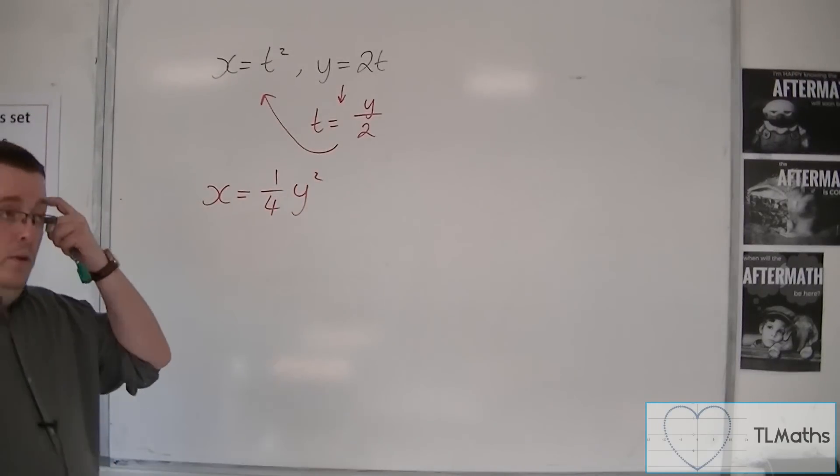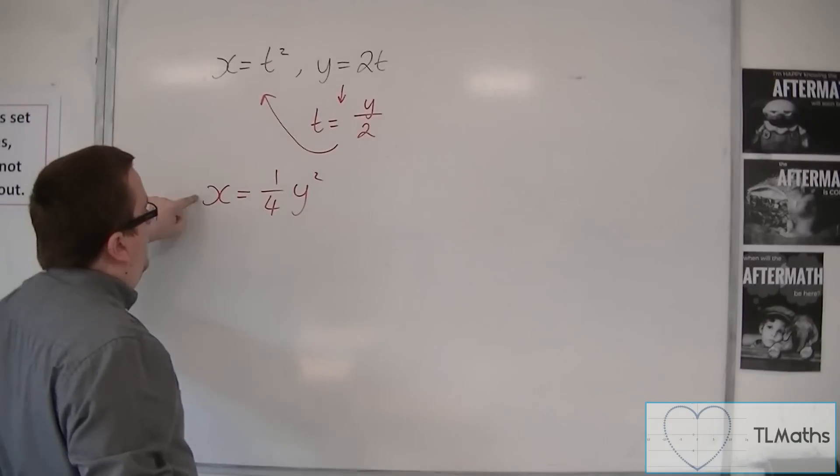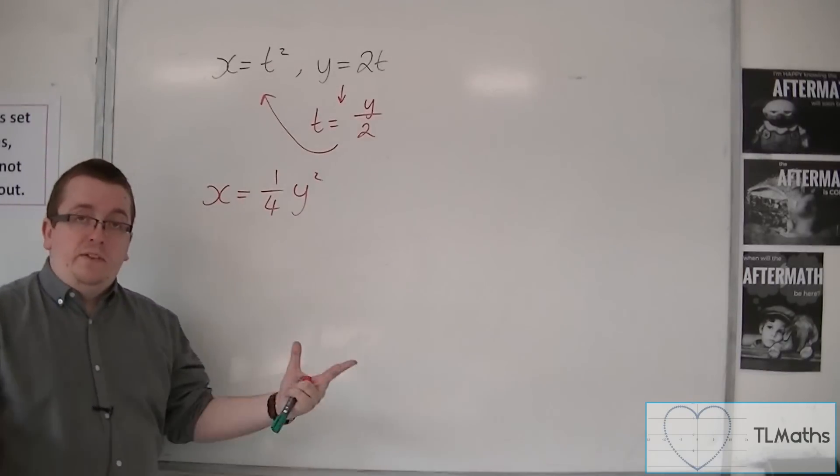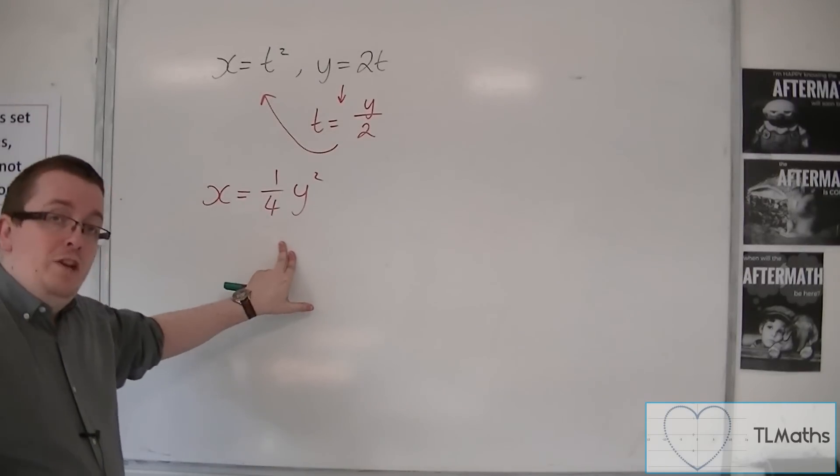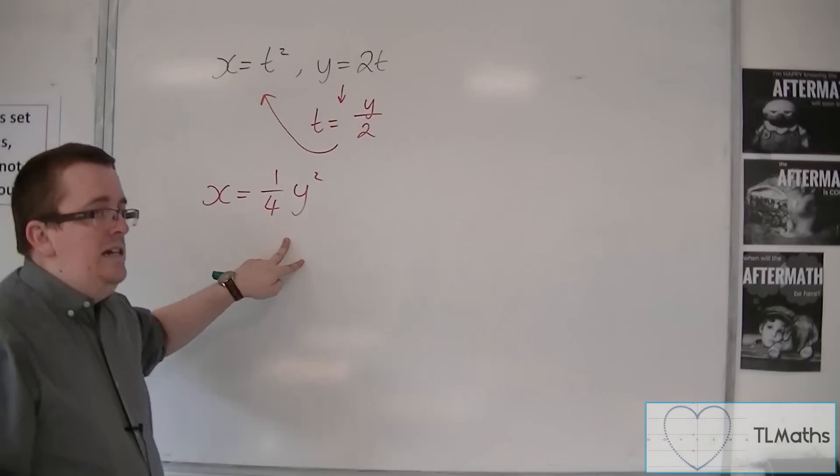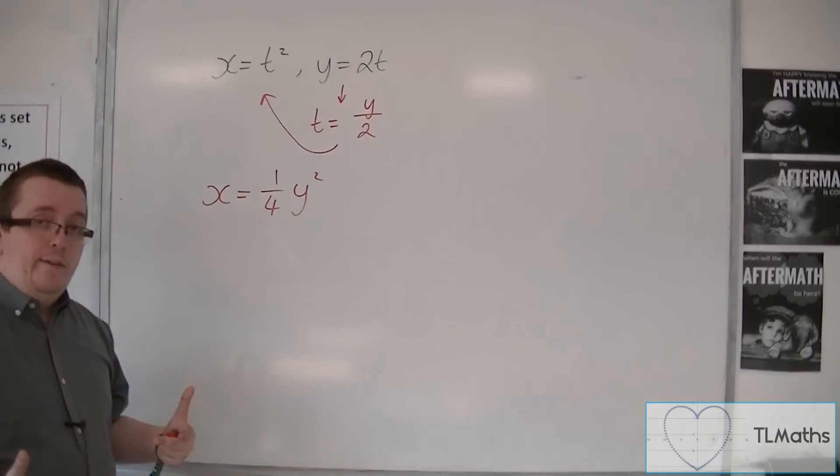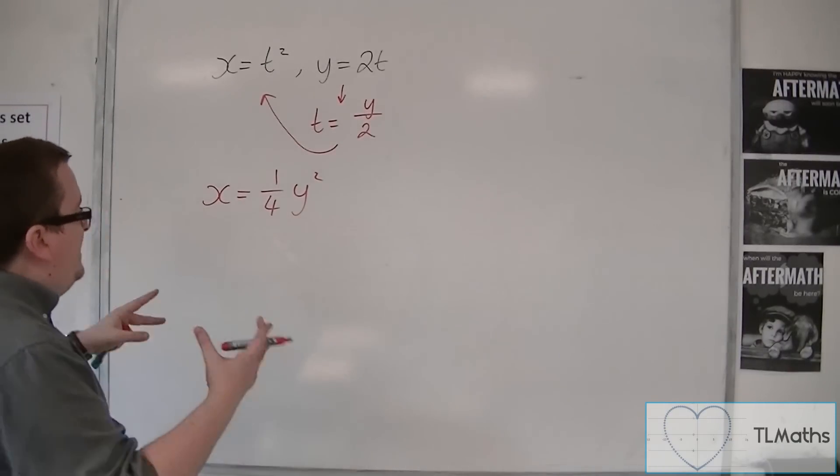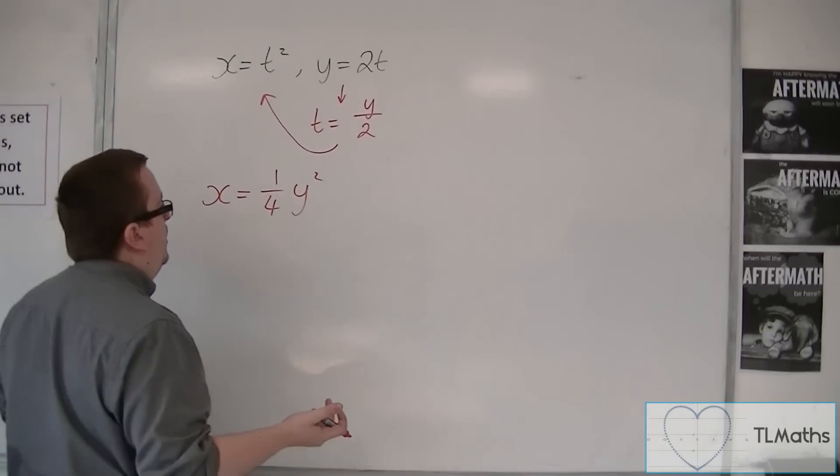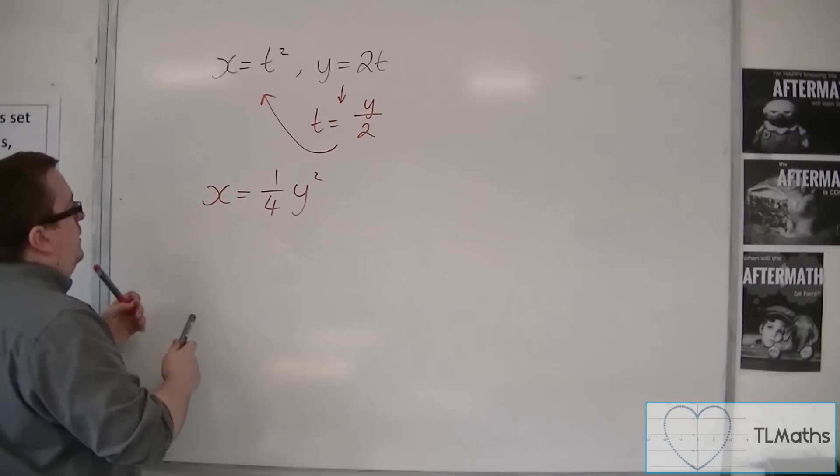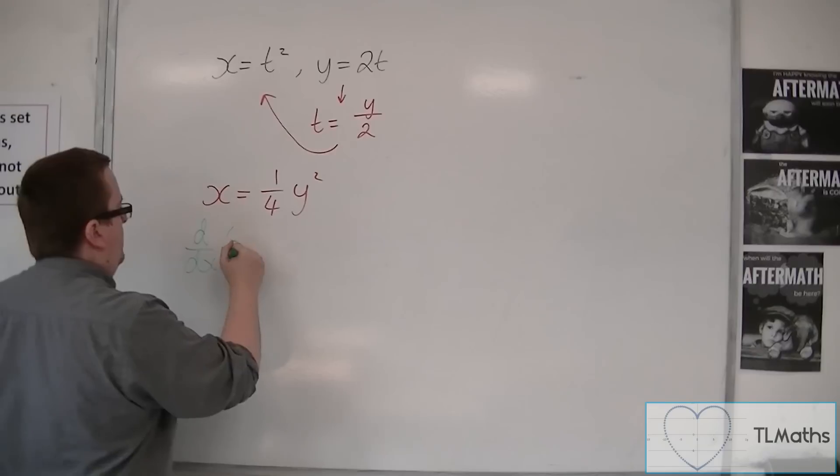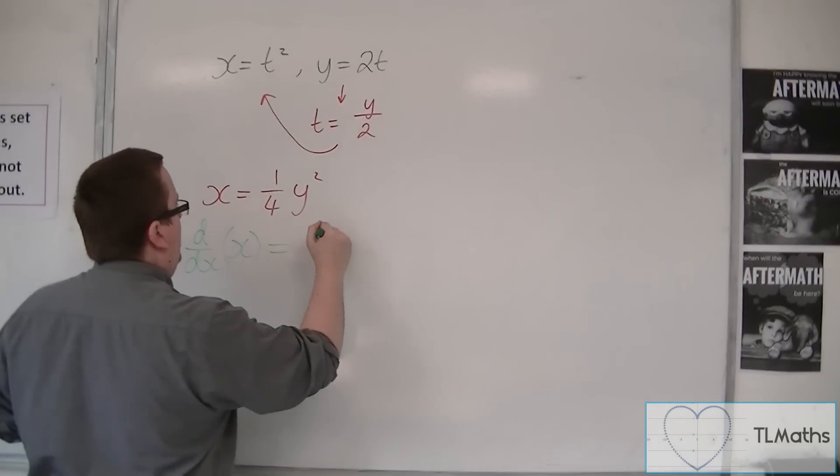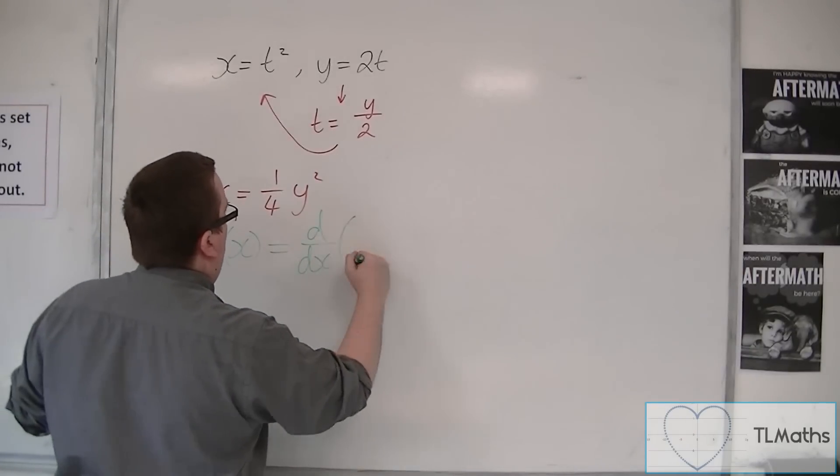So these parametric equations and this Cartesian equation should be the same curve. Now, in order to find dy by dx to differentiate this, I need to use implicit differentiation. So I need to differentiate both sides of the equation.